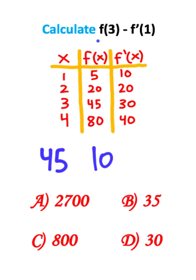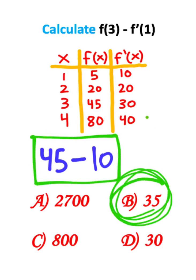So using this chart, f of three minus f prime of one is the same thing as 45 minus 10. And 45 minus 10 equals 35. So 35 is the answer to this problem.